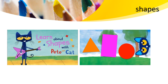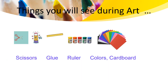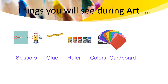There is a triangle. What things do you see around you as a triangle? Things you use during art class. You guys are going to use scissors, glue, rulers, cardboard, and also colors.